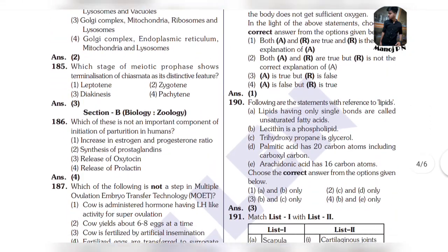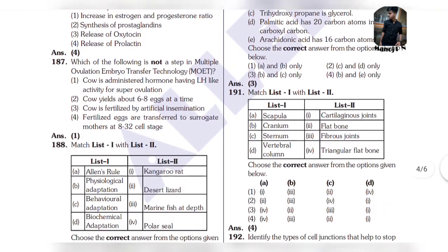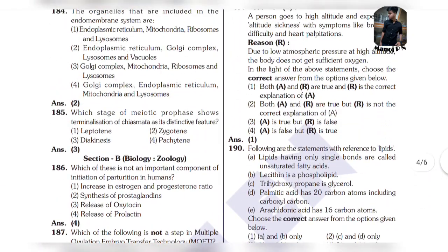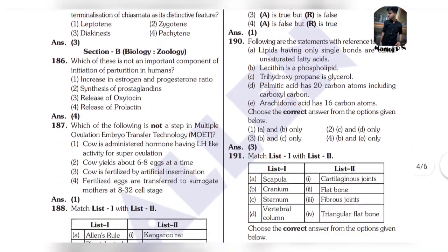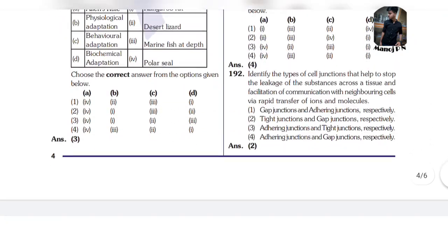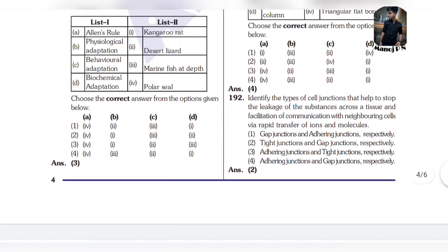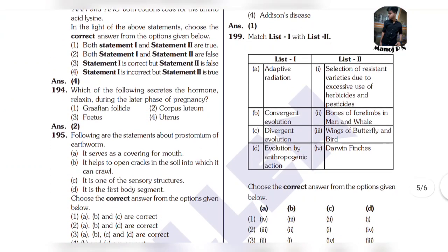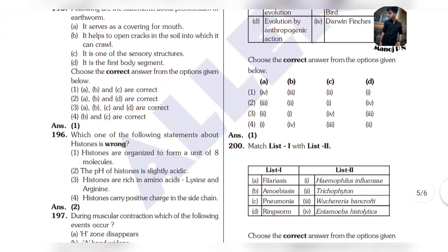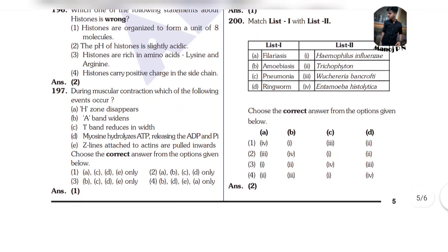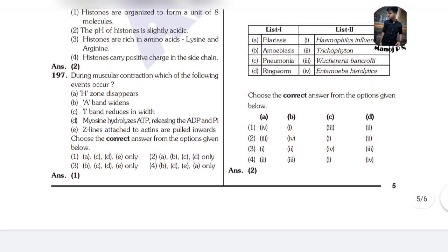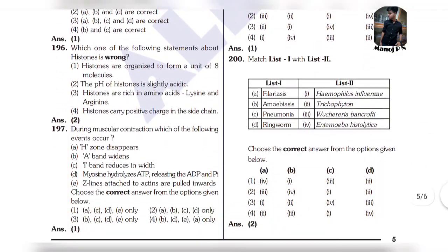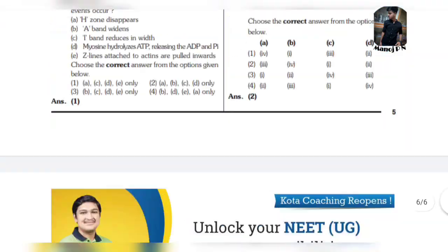184 is 2, 185 is 3, 186 is 4, 187 is 1, 188 is 3, 189 is..., 190 is..., 191 is 4, 192 is 2, 193 is 4, 194 is 2, 195 is 1, 196 is 2, 197 is 1, 198 is 1, 199 is 1, 200 is 2.